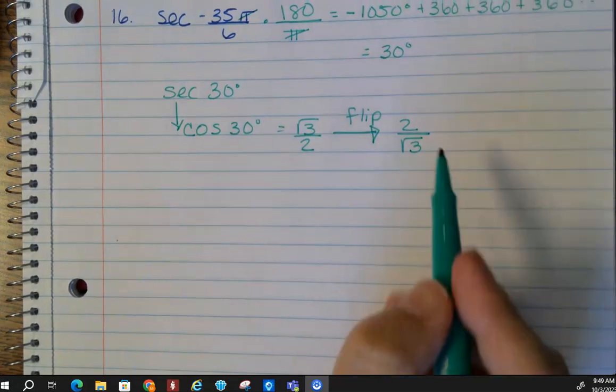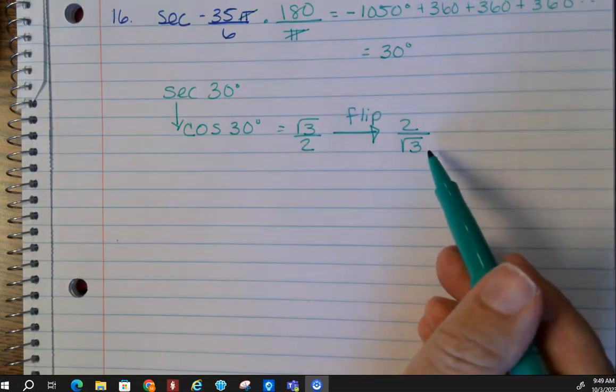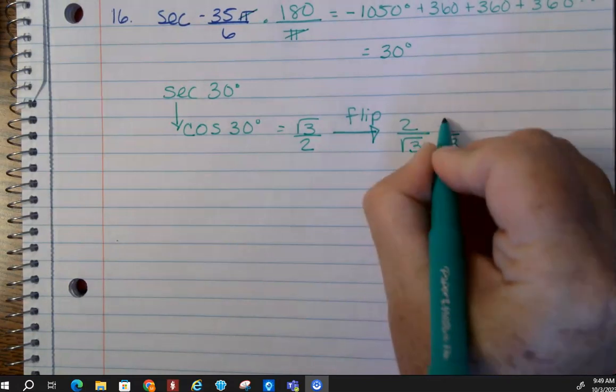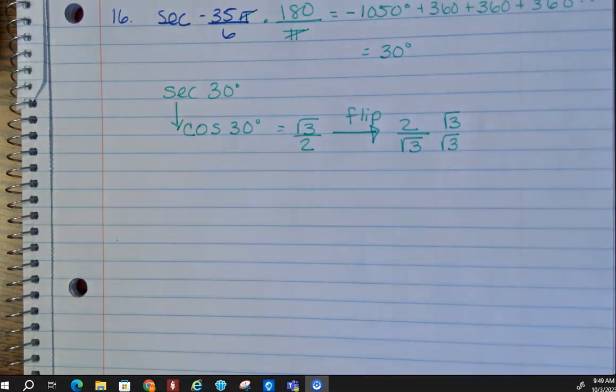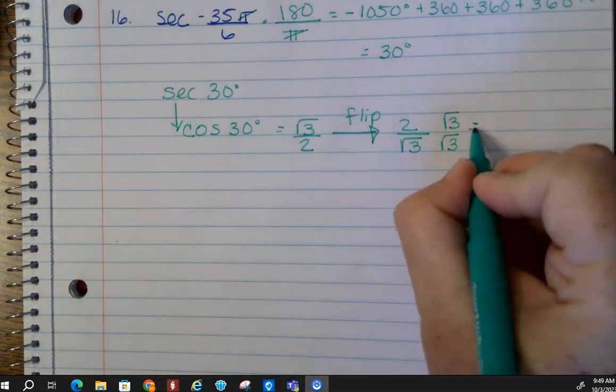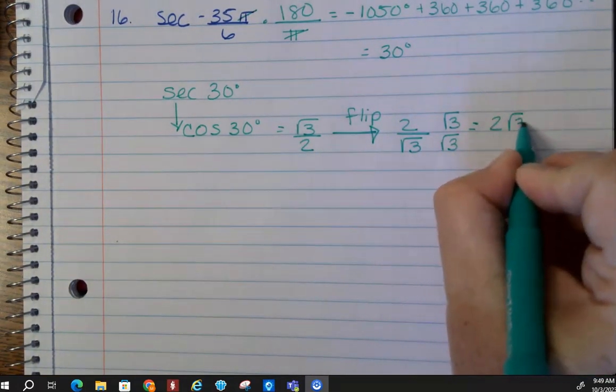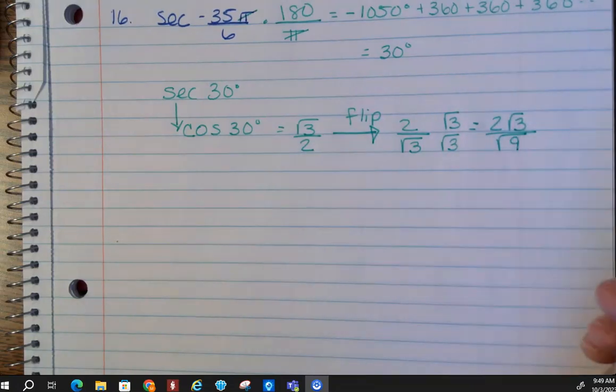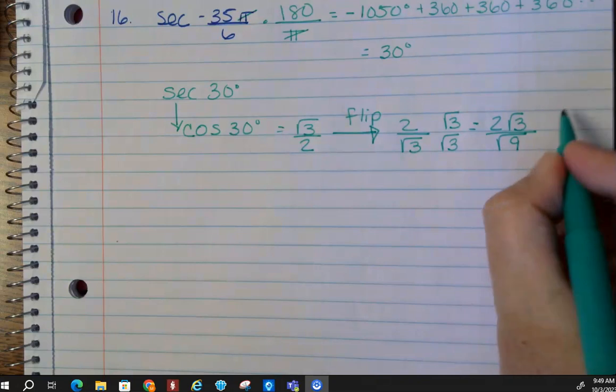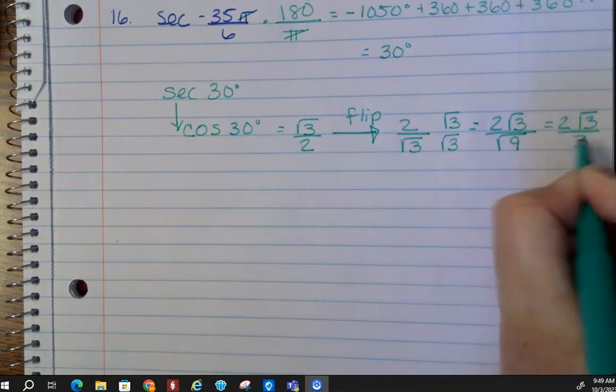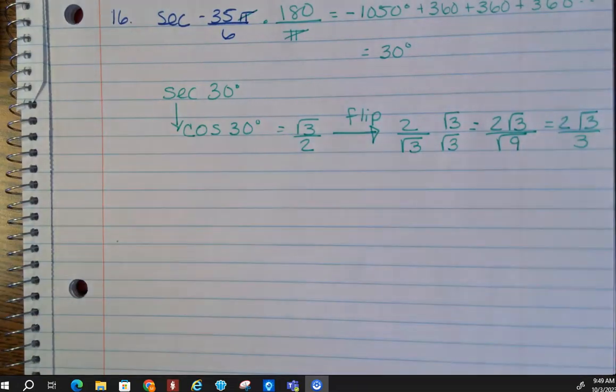Okay. Now we can't have the square root at the bottom, so what we're going to do is rationalize it. So multiply both the top and the bottom by that square root of 3, and we get 2 square root of 3 over the square root of 9. And then we're going to clean this up, so we get 2 square roots of 3 over 3, and that is your final answer.